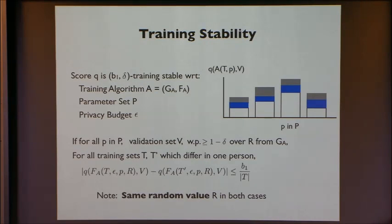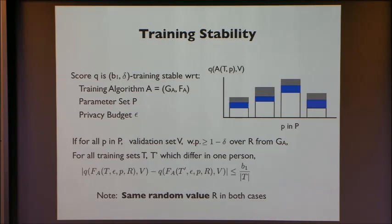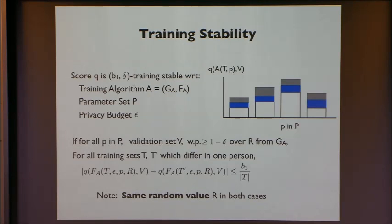Here is the training stability condition. Suppose you have a score Q. We say it is B1-delta training stable with respect to a training algorithm A, parameter set P, and privacy budget epsilon, if for all parameters in the set, for all validation sets, with probability 1 minus delta over R: if you change your training set by one person and keep your random draw R fixed, then the validation score will not change very much. Here B1 over the size of the training set measures how much it would change. The key point is that we keep the same random value R fixed while changing one person's value in the training set.